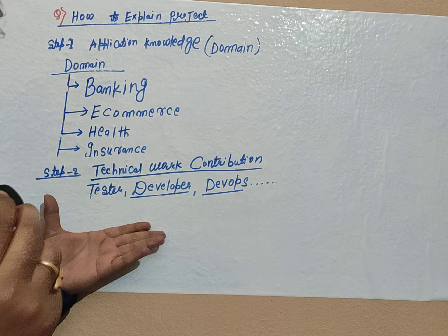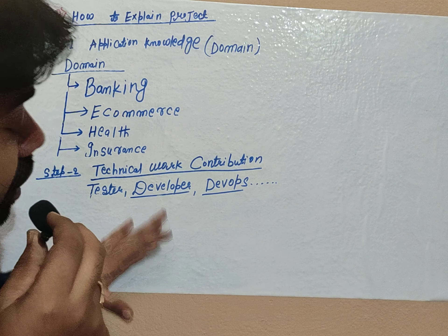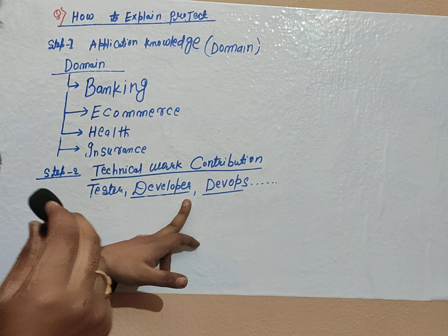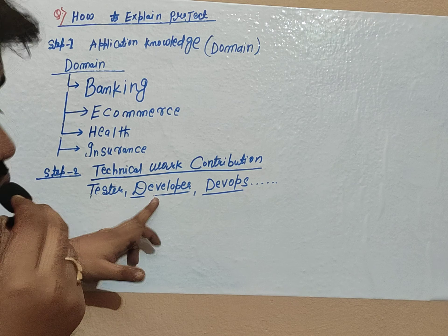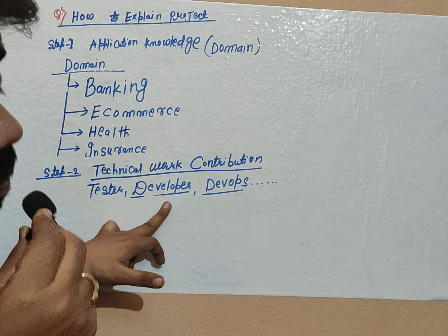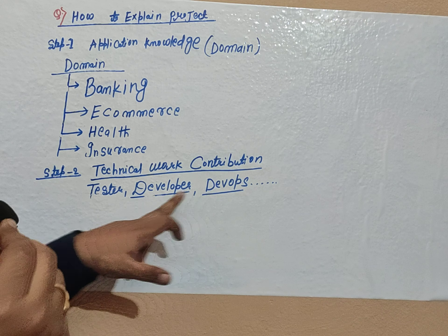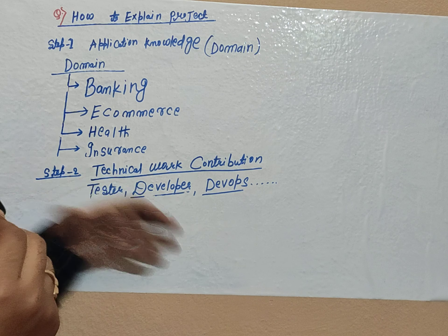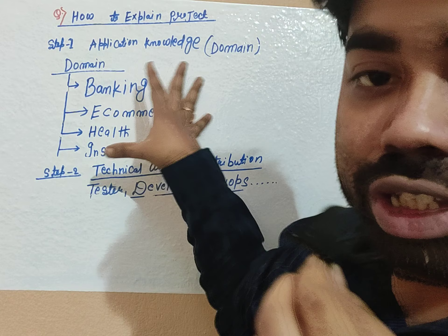Some projects are from scratch level. I am going to tell you about the top-level flow at an MNC company. If you get a job as a developer, first you understand the requirement. After understanding the requirement, you do coding — not from scratch, as the project is already there. As per the requirement, you change the code, then do unit testing. After unit testing, the DevOps engineer deploys the code to the test environment or staging environment.